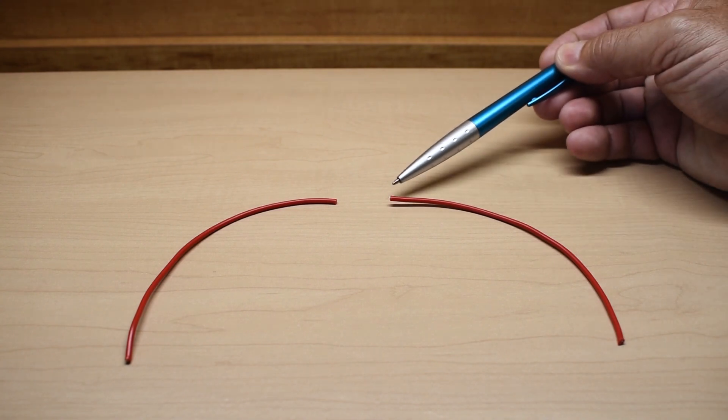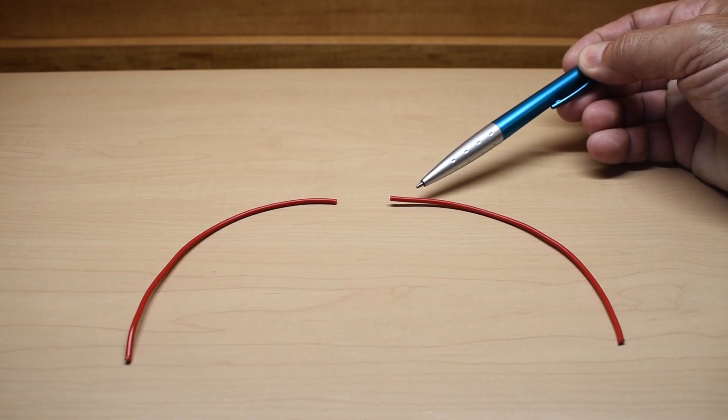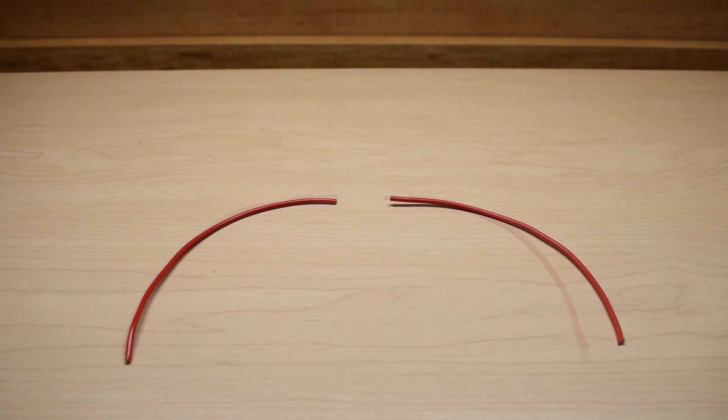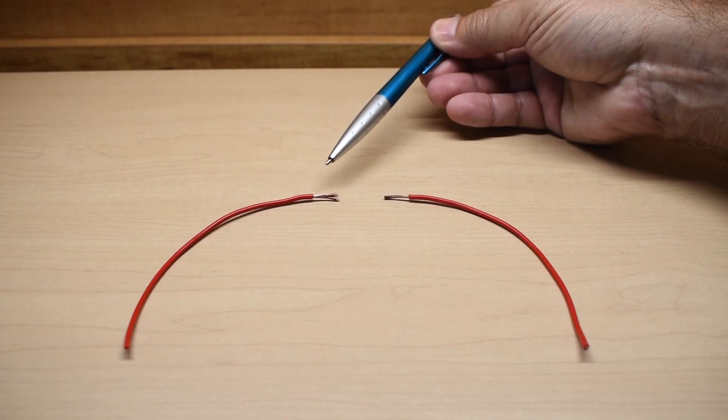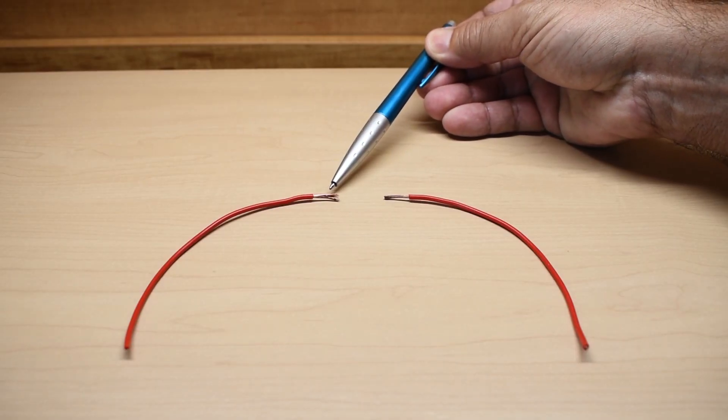The first thing I'm going to do is strip the insulation back about a half of an inch on each wire. After the insulation has been removed, you want to make sure the copper strands are bright and shiny.